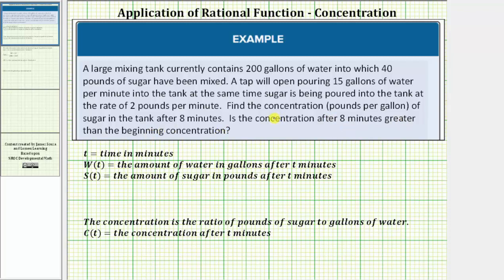Before we define a function for the concentration, we need a function for the amount of water in the tank as well as a function for the amount of sugar in the tank. Let t equal the time in minutes. Let w(t) equal the amount of water in gallons after t minutes, and let s(t) equal the amount of sugar in pounds after t minutes.